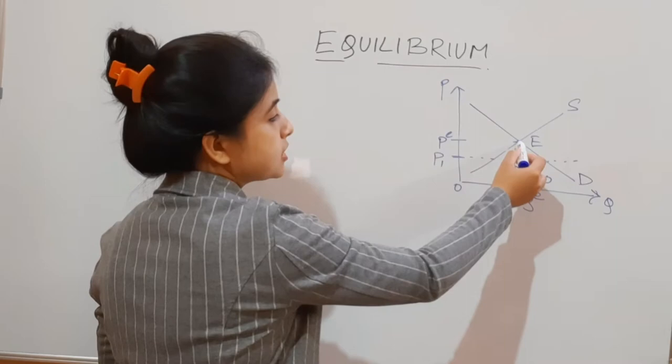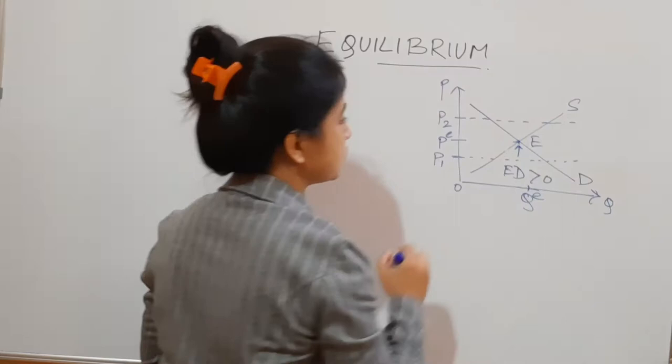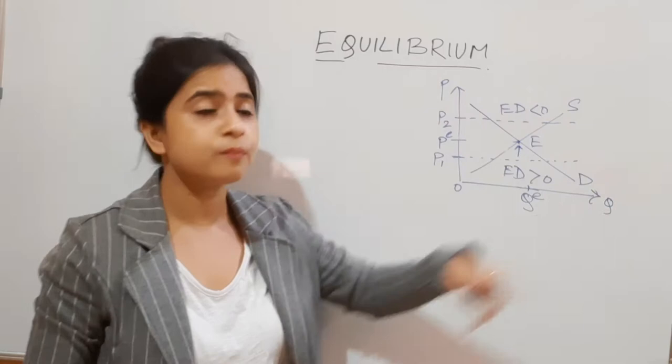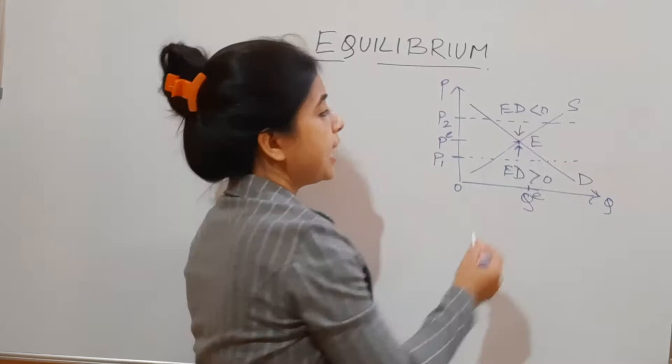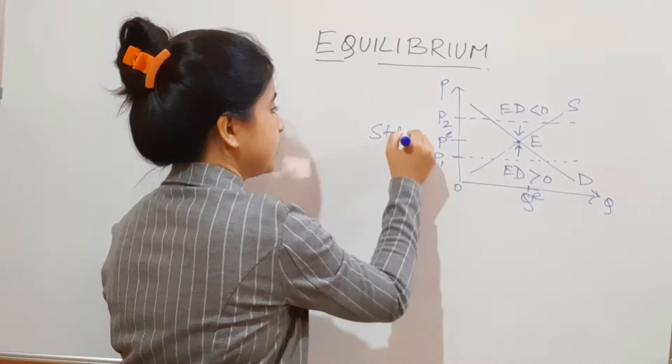Under the presence of excess demand, the equilibrium will try to adjust towards point E — that means the price will tend to go up. Similarly, if we have a price P2 above equilibrium, the demand is less than supply, so excess demand is negative. Under this case, the price will fall back to the equilibrium position E. This is called stable equilibrium.